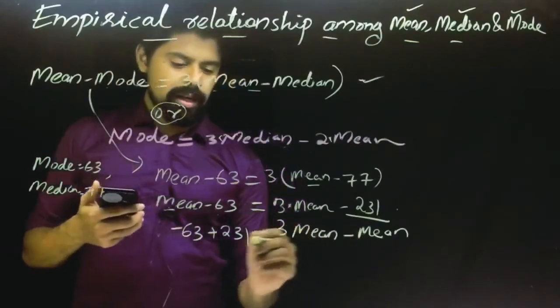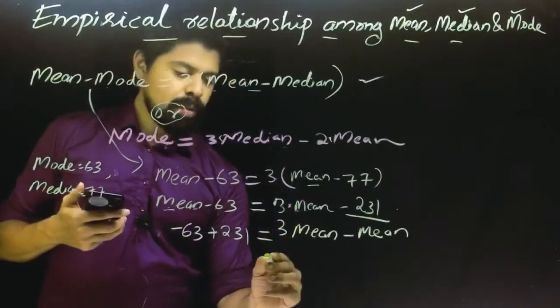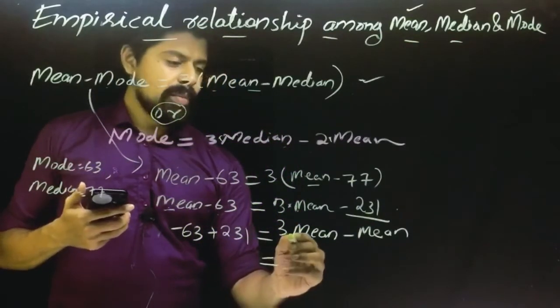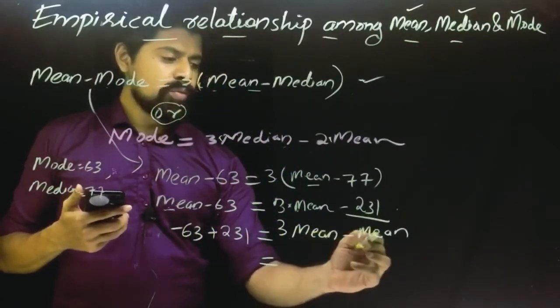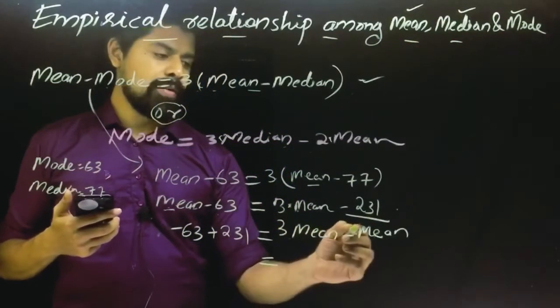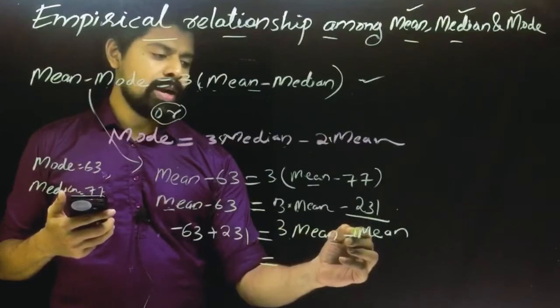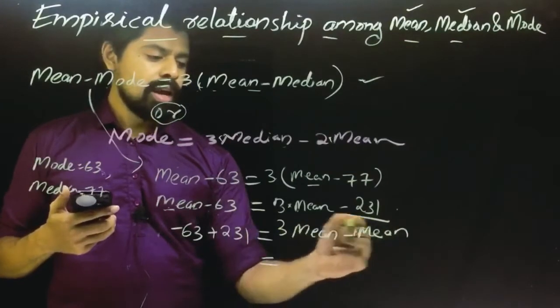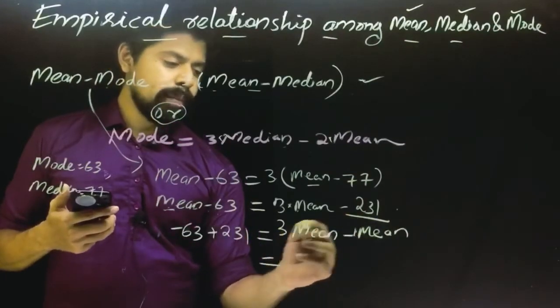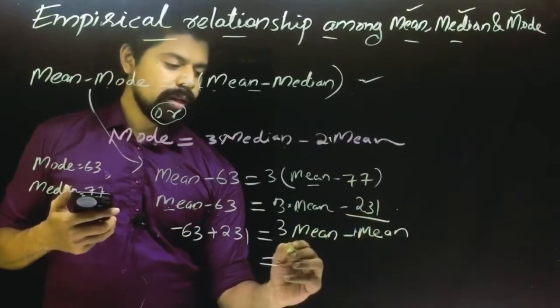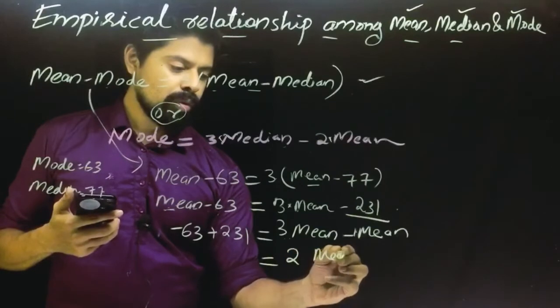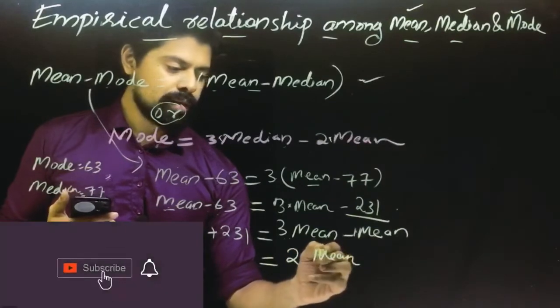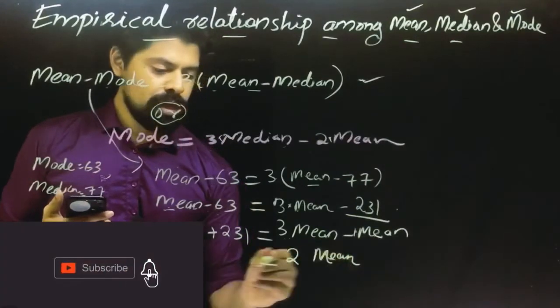So 3 mean minus 1 mean gives us 2 mean. That's why we have 1 and 1 into mean. If we have 3 mean minus 1 mean, then it's 2 mean.